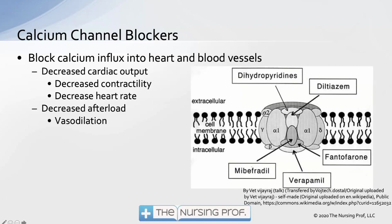Calcium channel blockers also decrease afterload by causing vasodilation. Calcium was causing contraction of the arterioles, increasing blood pressure; blocking calcium into those arterioles causes vasodilation and decreases blood pressure. In a cardiac patient, we may use a calcium channel blocker to decrease heart rate and contractility — this decreases oxygen consumption by the heart, while we're also decreasing afterload, making it easier for the heart to pump.